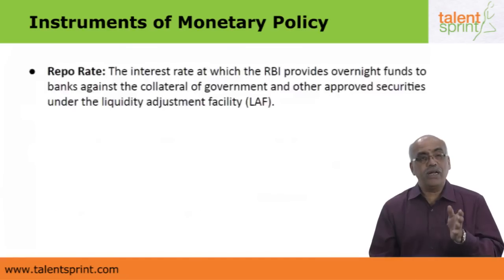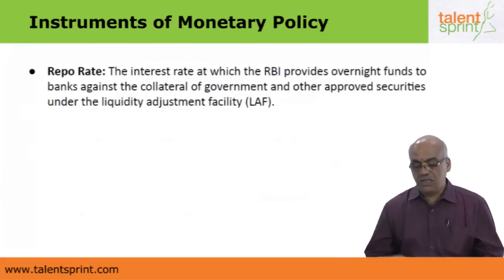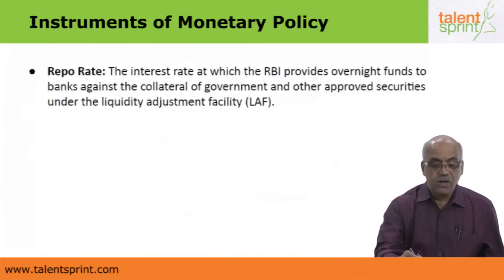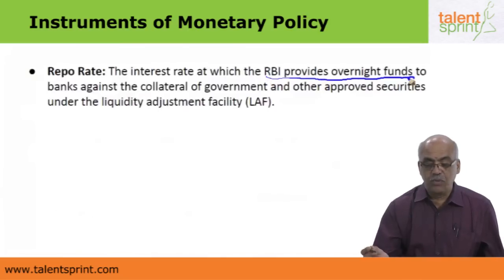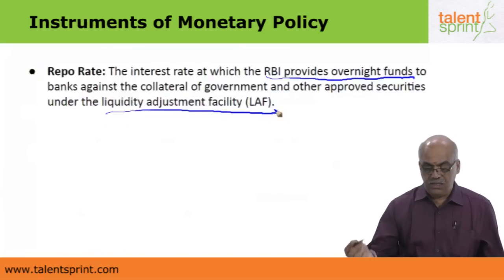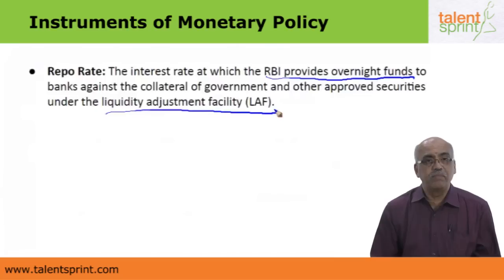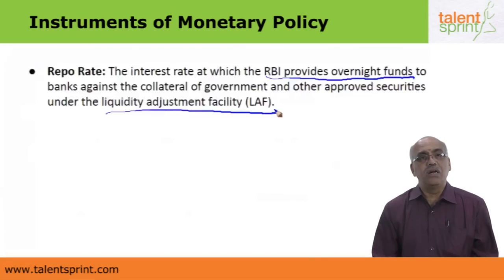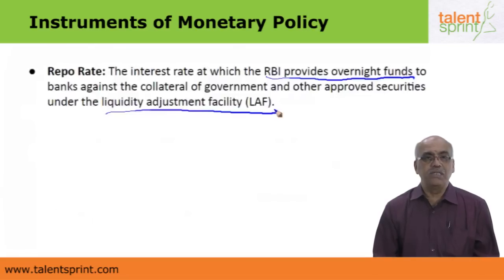The first quantitative instrument is the repo rate — the rate at which the RBI provides liquidity to banks. The RBI provides overnight funds to banks against the collateral of government securities and other approved securities under the Liquidity Adjustment Facility. Repo money is always given for the overnight period only; if banks borrow today, they must repay tomorrow.